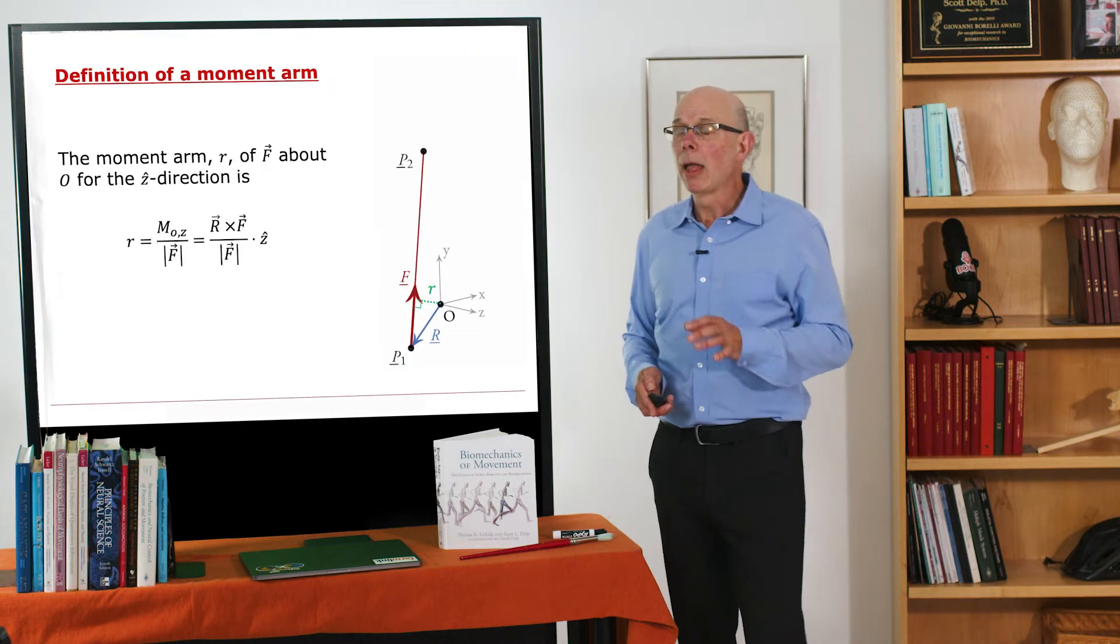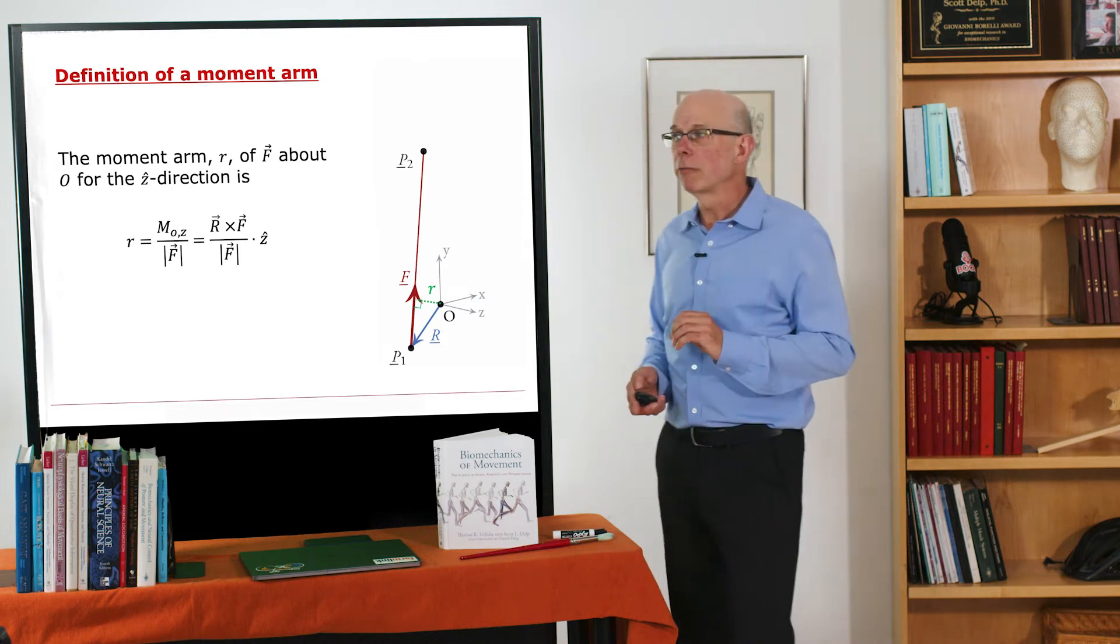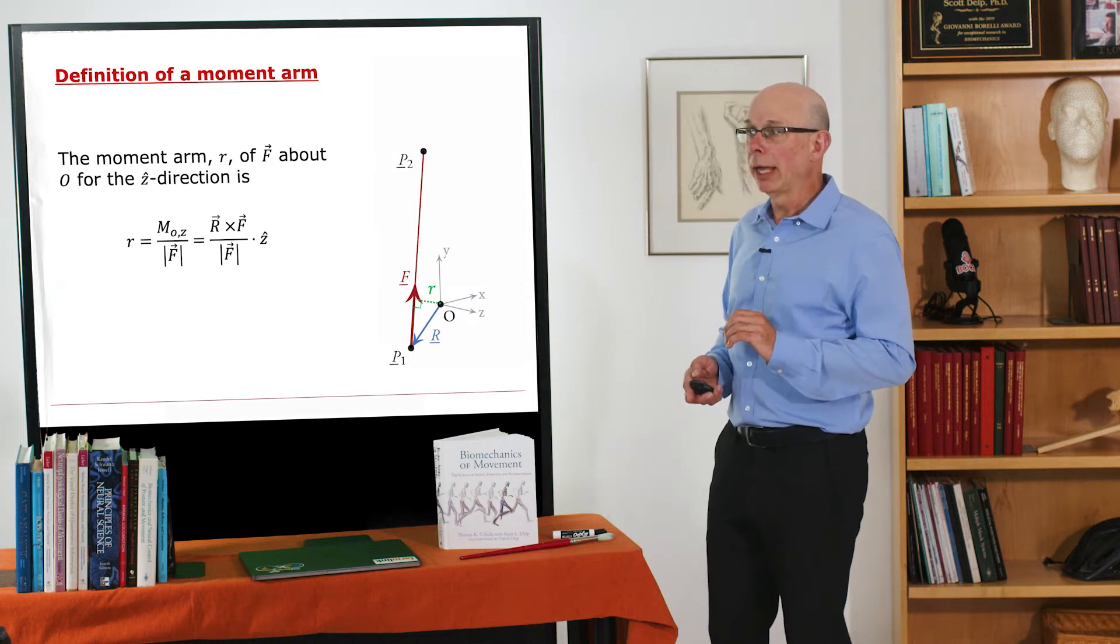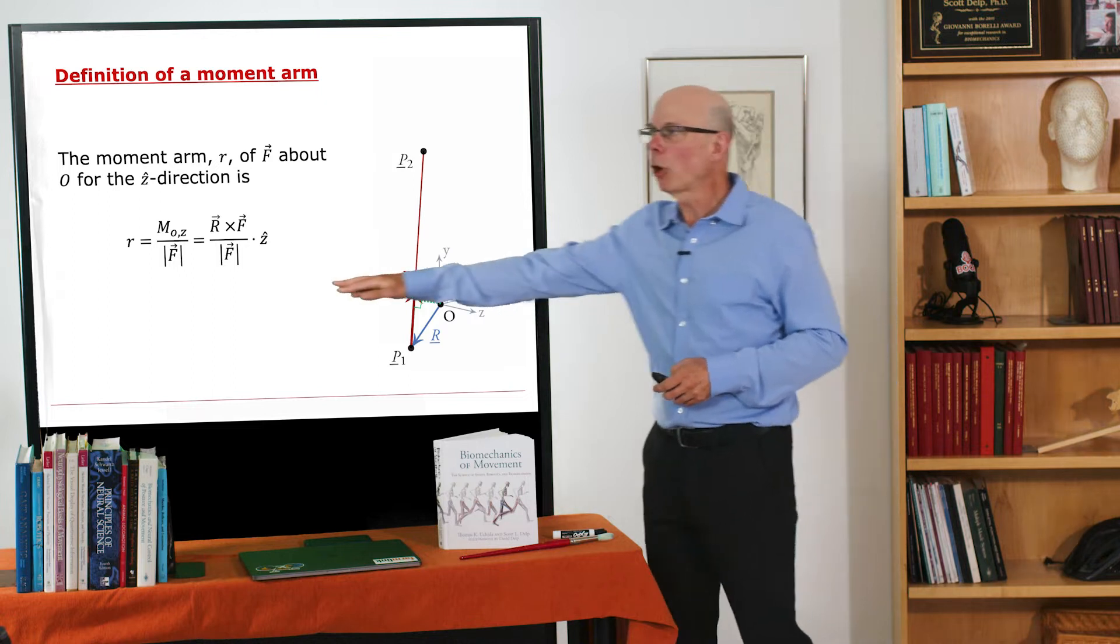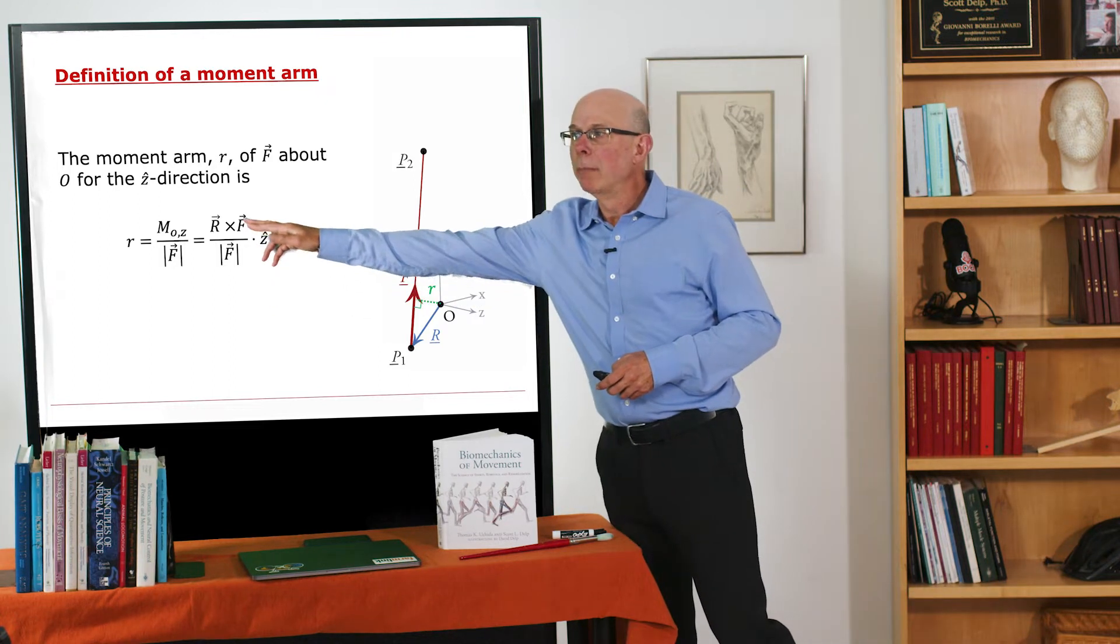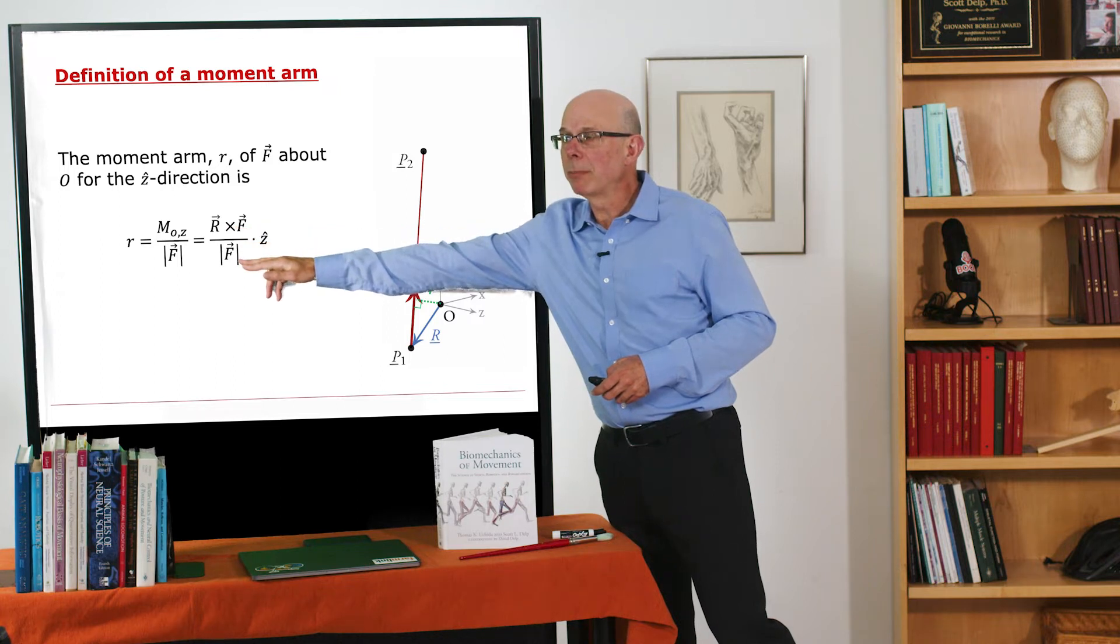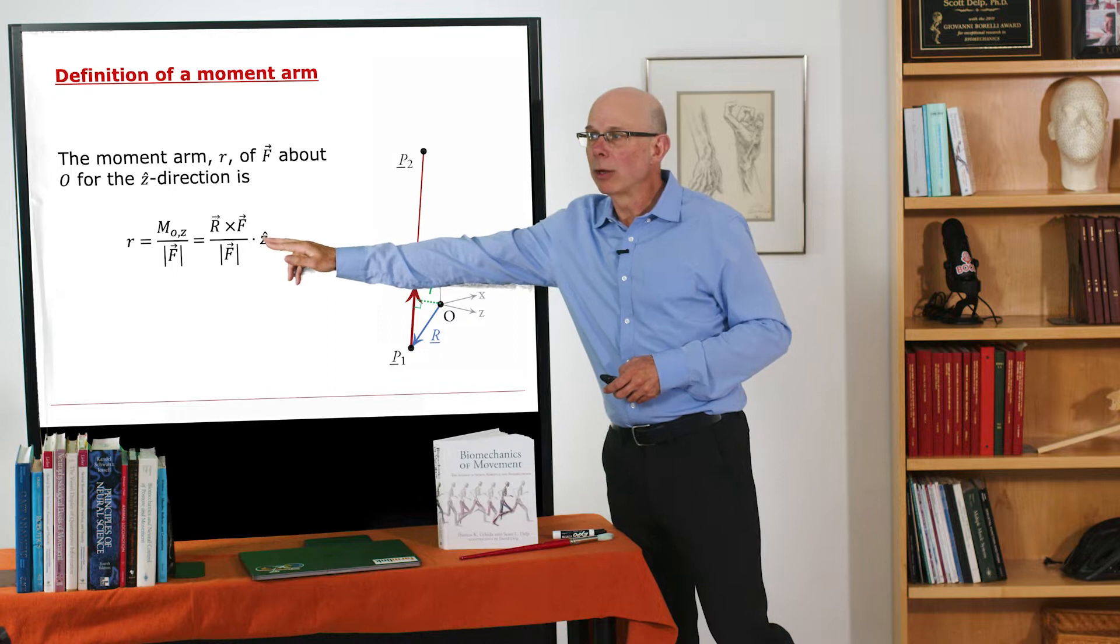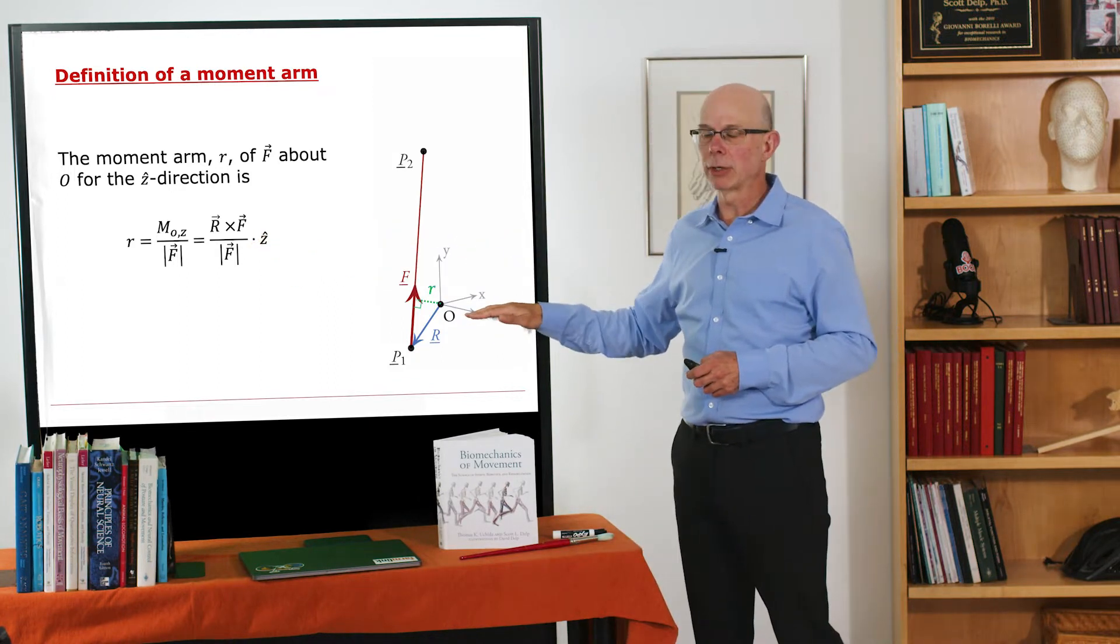So given a moment, how do we define a moment arm? The moment arm R of a vector F about O in the Z direction is given here. So R is the moment R cross F divided by the magnitude of the vector F, and then we dot that with a unit vector Z in the Z direction.